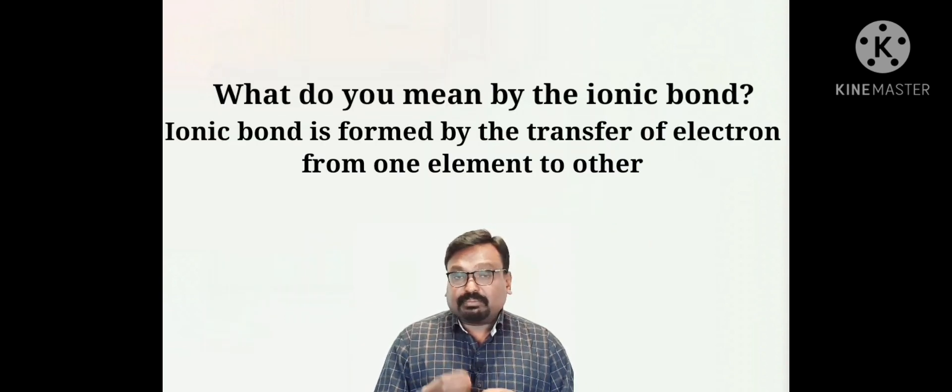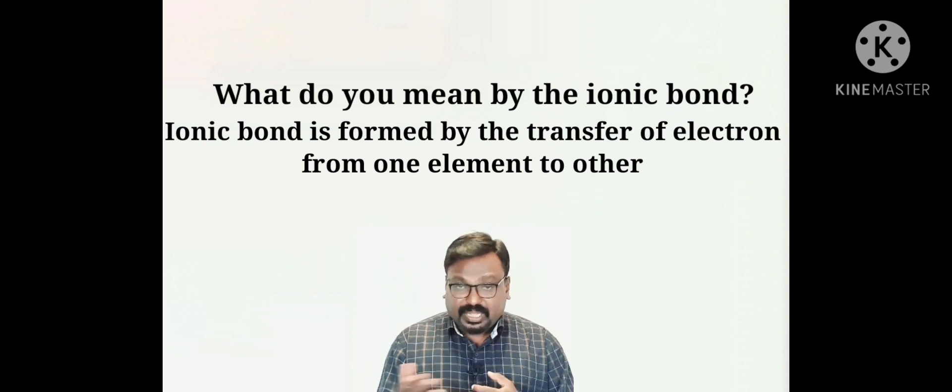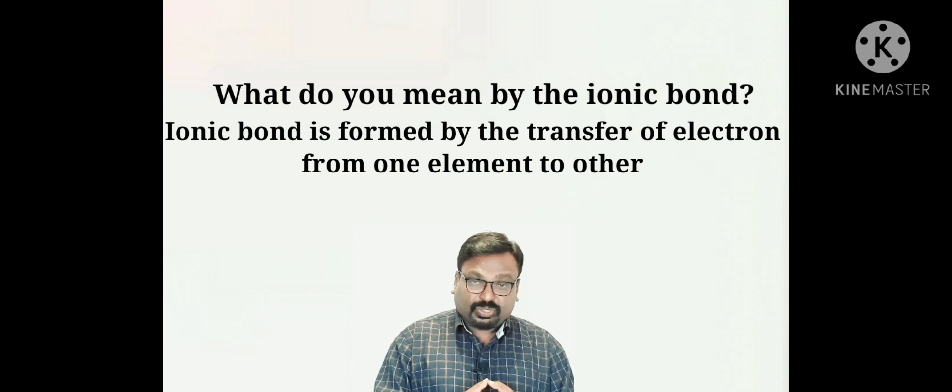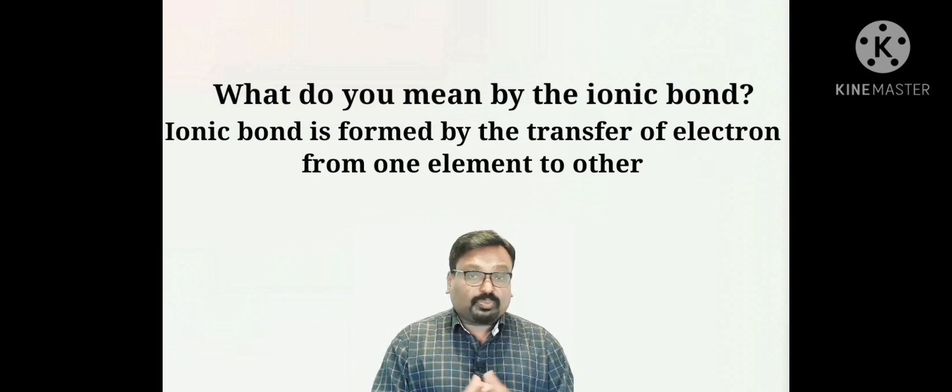An ionic bond is a bond which is formed by the transfer of electrons. An element either gains or loses electrons to form an ionic bond. So when we come to carbon, is it possible for carbon to form a bond either by gaining electrons or by losing electrons? Let us now see whether it is possible for carbon to form a bond by gaining or losing electrons.